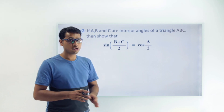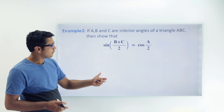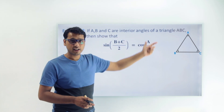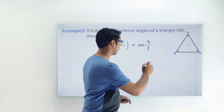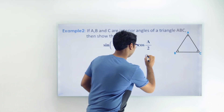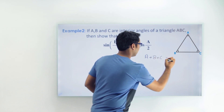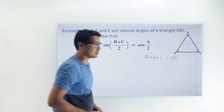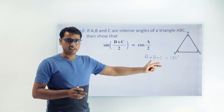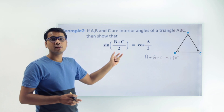All we have to do is find the complementary function of (B + C)/2. We are given that A, B, C are interior angles of triangle ABC, so we can write A + B + C = 180°, since the sum of interior angles of a triangle is 180 degrees. Now we have to break (B + C)/2 into its complementary angle.